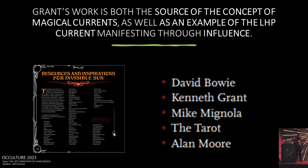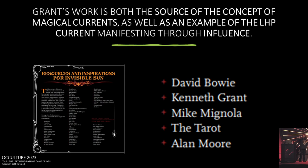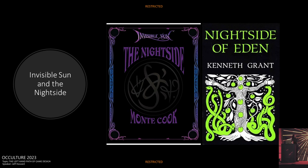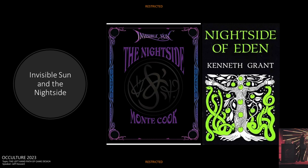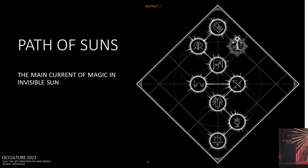We know this concept comes from Kenneth Grant because Monty Cook spells it out in his resources and inspirations for Invisible Sun — sandwiched very honorably between David Bowie and Mike Mignola is Kenneth Grant. His influence extends so far that when a supplement was released as a stretch goal, it's called the Night Side, in direct allusion to the fourth volume of the Typhonian Trilogies, Night Side of Eden. There's the Path of Suns: the main current of magic in Invisible Sun. You put circular tarot cards down on it when you cast spells.